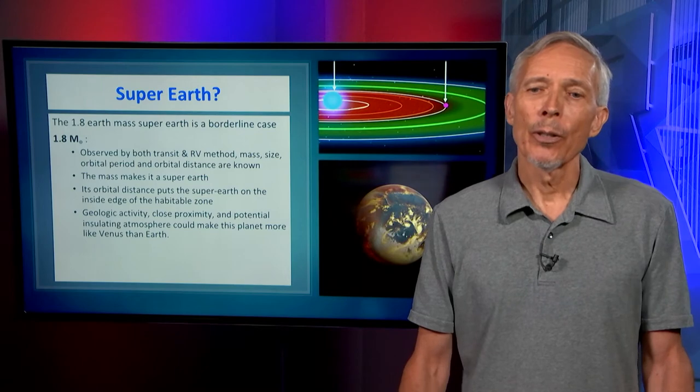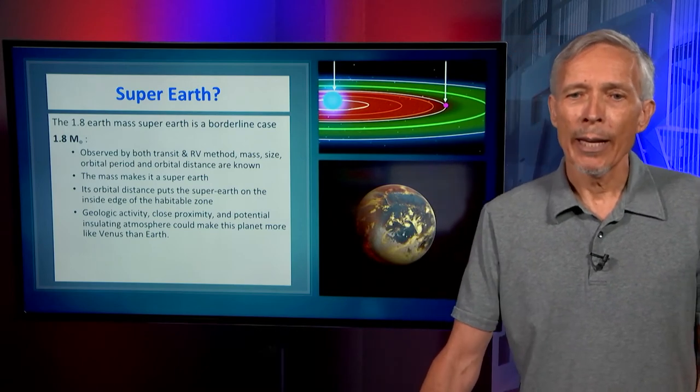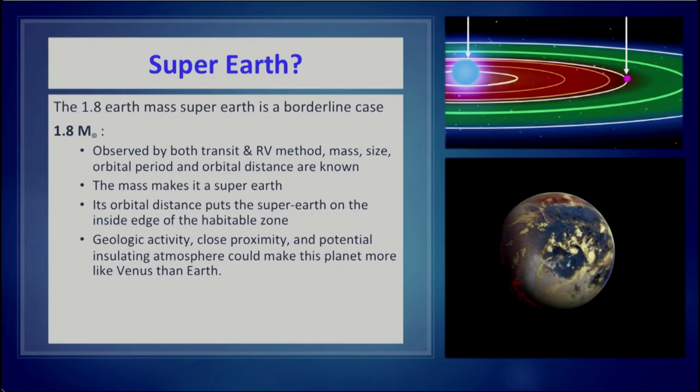What about the super-Earth? The super-Earth is a borderline case. It's almost two times the size or mass of the Earth. Let's imagine it is also measured by both methods, so we have a mass and a size and a mean density. We know its orbital period from either technique, and we can calculate its orbital distance from Kepler's laws. The mass makes it a super-Earth, and its orbital distance puts it on the inside edge of the habitable zone.